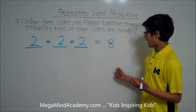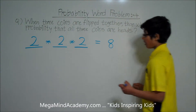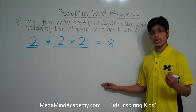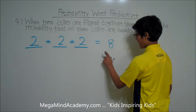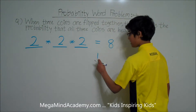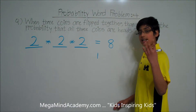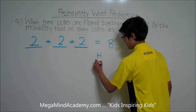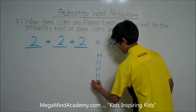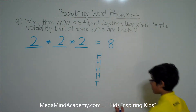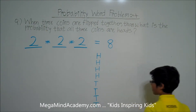Let's go into detail about how we get eight possible outcomes. We have an equal chance of getting heads or tails for coin one, and there are eight outcomes, so let's divide eight by two — we get four. So we have four heads and four tails. Heads, heads, heads, heads, tails, tails, tails, tails.